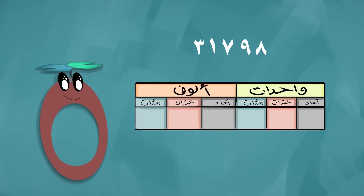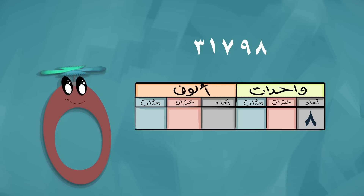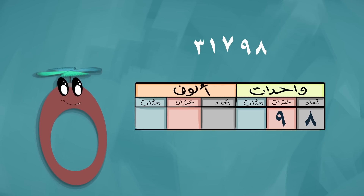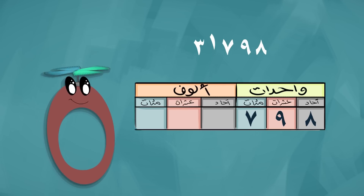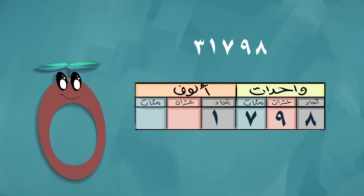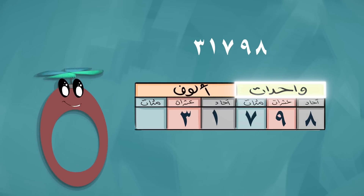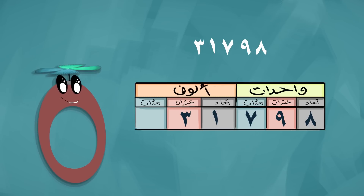فالرقم 8 في منزلة الآحاد، والرقم 9 في منزلة العشرات، والرقم 7 في منزلة المئات، والرقم 1 في منزلة آحاد الألوف، والرقم 3 في منزلة عشرات الألوف. إذن نبدأ قراءة العدد بقسم الألوف ثم الواحدات: 31 ألفاً وسبعمائة وثمانية وتسعون.